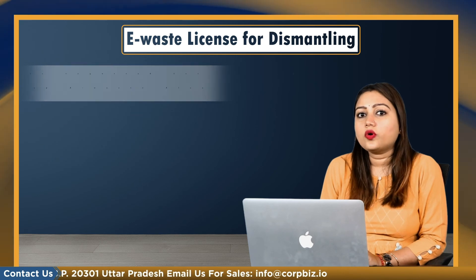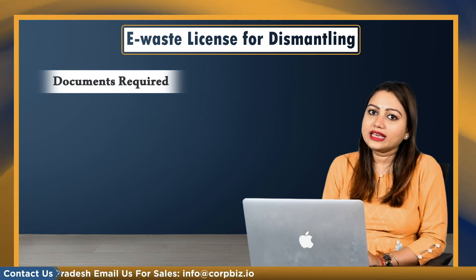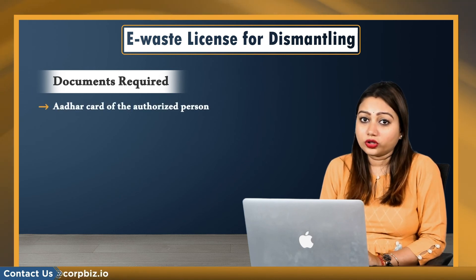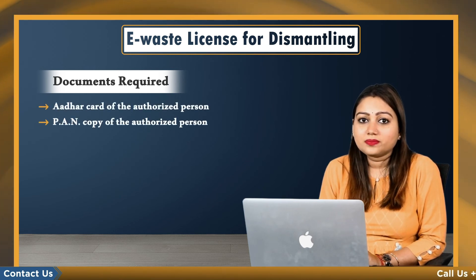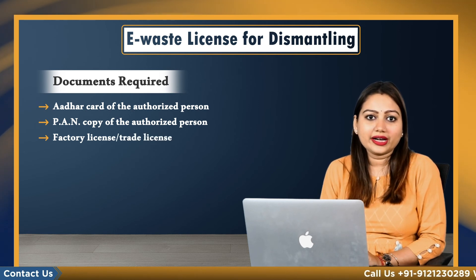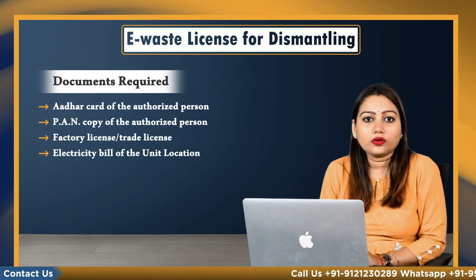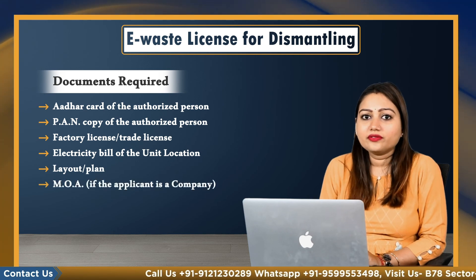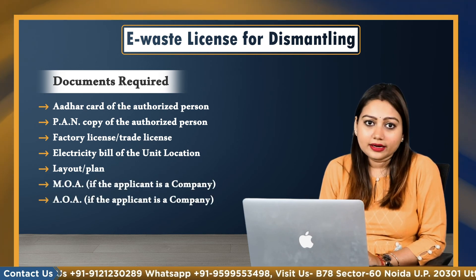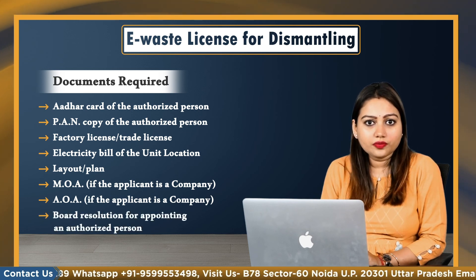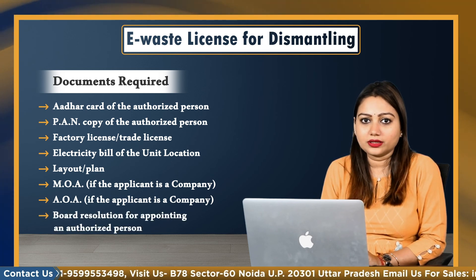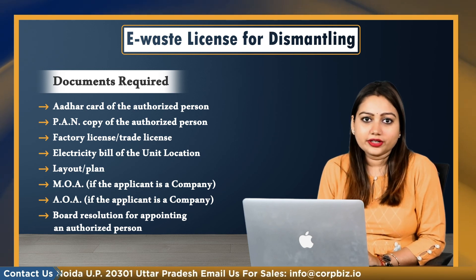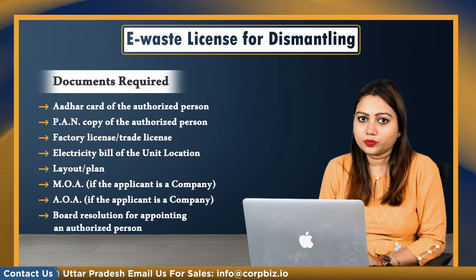Documents required for e-waste authorization include: Aadhaar card of the authorized person, PAN copy of the authorized person, factory license or trade license, electricity bill of the unit location, layout plan, MOA if the applicant is a company, AOA if the applicant is a company, and board resolution for appointing an authorized person. With all these documents, you can get the required registration for going ahead with this process.